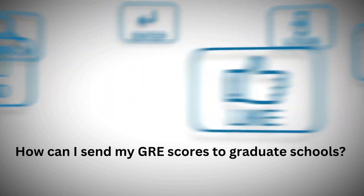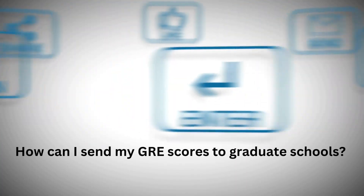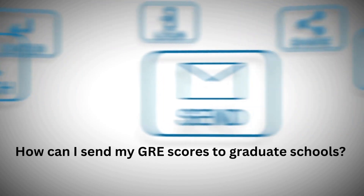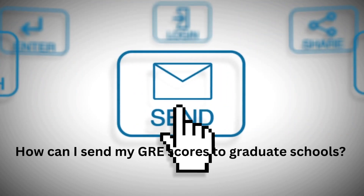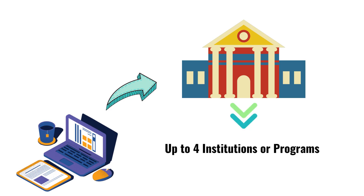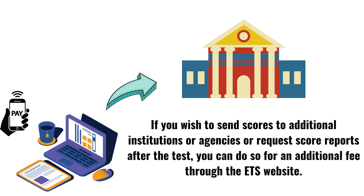How can I send my GRE scores to graduate schools? During the registration process, you can select up to four institutions or programs to receive your official GRE scores. If you wish to send scores to additional institutions or request score reports after the test, you can do so for an additional fee through the ETS website. You can send your scores electronically or by mail, depending on the preference of the receiving institution.